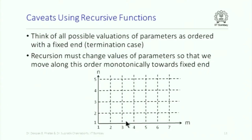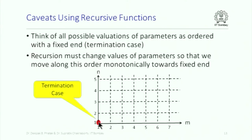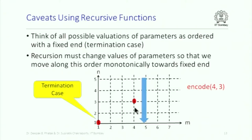For example, take a grid plotting m and n for values 1 through 7 for each. The target destination for termination of the function is when both m and n are 1. You can start from any point on this grid depending upon the initial values of m and n — for example, encode(4, 3). The way the function is coded, it does not change both values simultaneously. The first movement is downward where n is reduced from 3 to 2 to 1. Once n becomes 1, the value of m is successively reduced until m becomes 1.